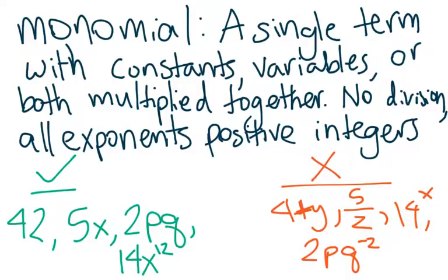A monomial is a single term with constants, variables, or both, multiplied together.